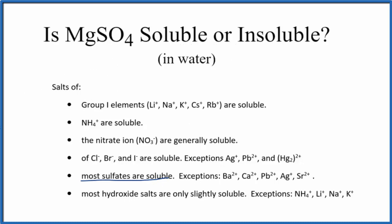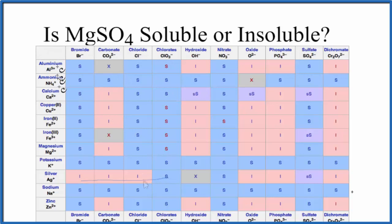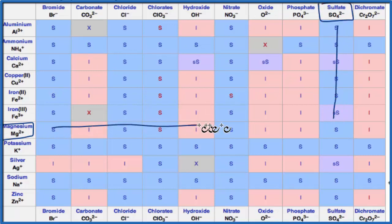We could also look at a solubility chart. If we look at our chart here, positives are down here on the left. We go down, and here's magnesium right here, Mg2+. And then we find sulfate on this side. We go down, and then we go across, and we see that S there. That S means that magnesium sulfate is soluble in water.